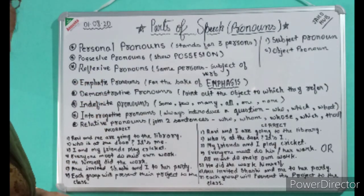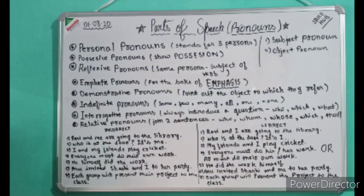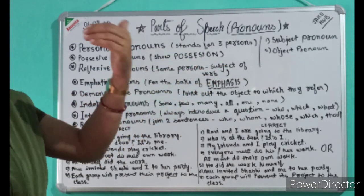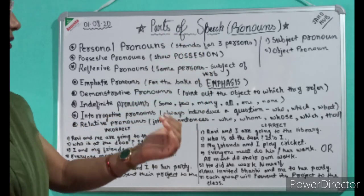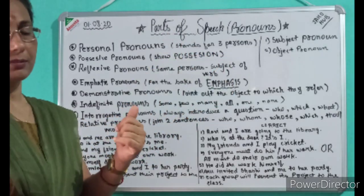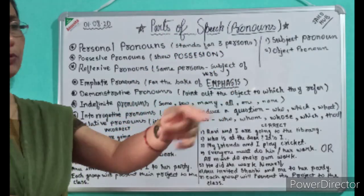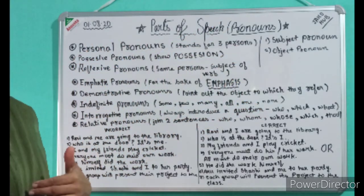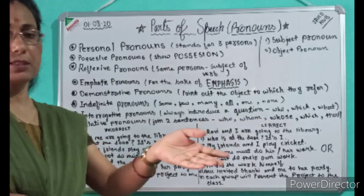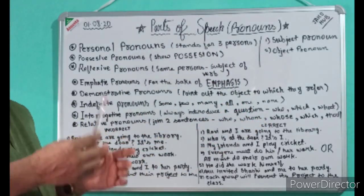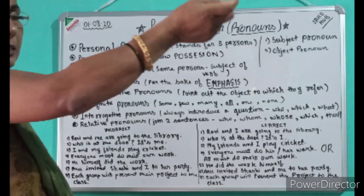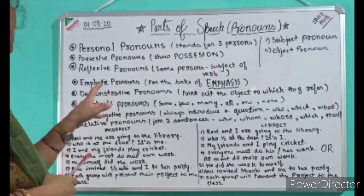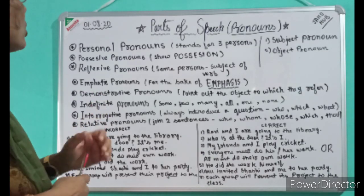Demonstrative pronoun. What is demonstrative pronoun? As the word describes itself, it points out some things — maybe near or maybe far. For example, 'This is the table. Put your book on that table.' Suppose, 'This is my pen. That is my boat. This is me. That is he.' So these things are called demonstrative pronouns.